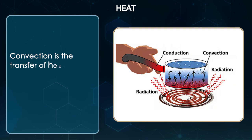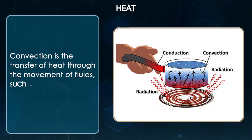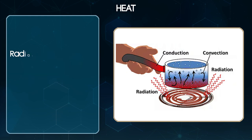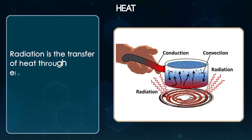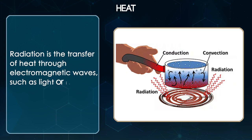Convection is the transfer of heat through the movement of fluids such as air or water. Radiation is the transfer of heat through electromagnetic waves such as light or infrared radiation.